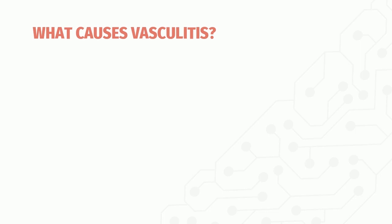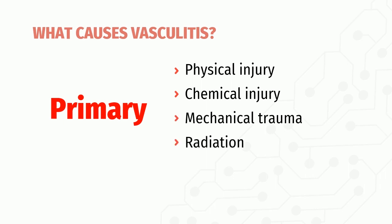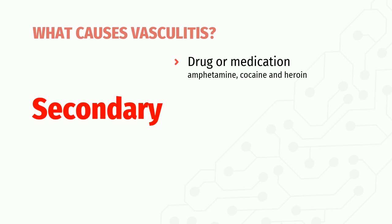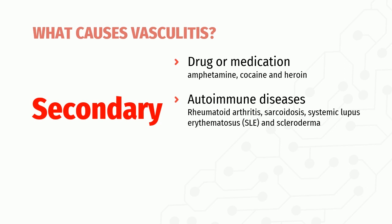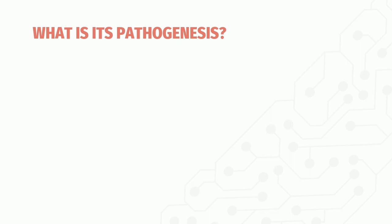Vasculitis can be either primary — a disease on its own, caused by physical injury, chemical injury, mechanical trauma, radiation, or toxins — or secondary. Secondary vasculitis may be due to drugs or medications such as amphetamines, cocaine, and heroin; autoimmune diseases such as rheumatoid arthritis, sarcoidosis, systemic lupus erythematosus, and scleroderma; malignancies such as blood cancers; or infections such as hepatitis B, C, and HIV.